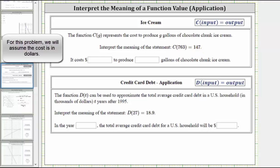For this function value, notice 763 is the input and for this function g is the input where g is the gallons of chocolate chunk ice cream and 147 is the output or function value where the output or function value represents the cost to produce the ice cream.